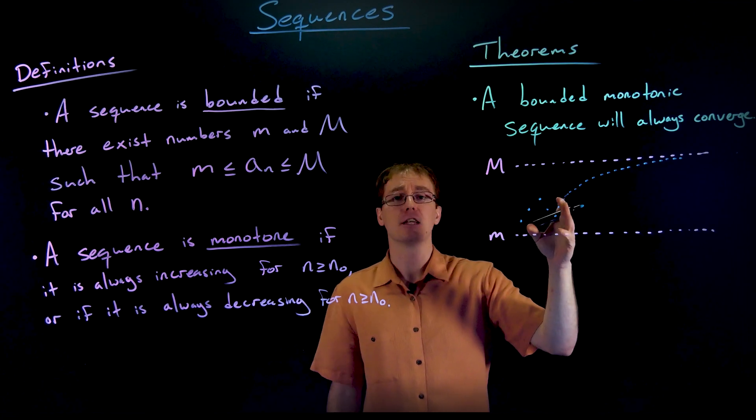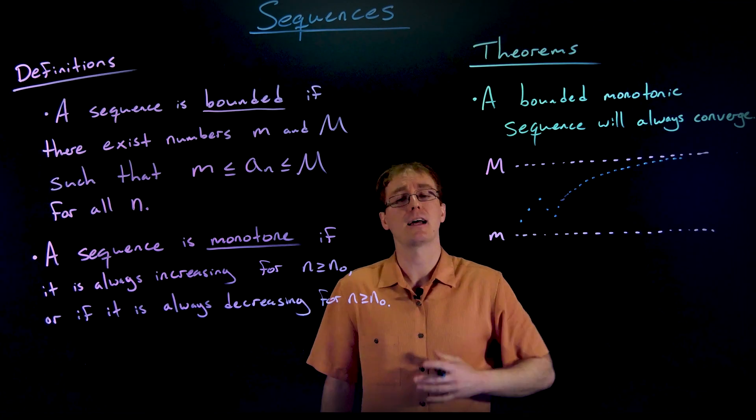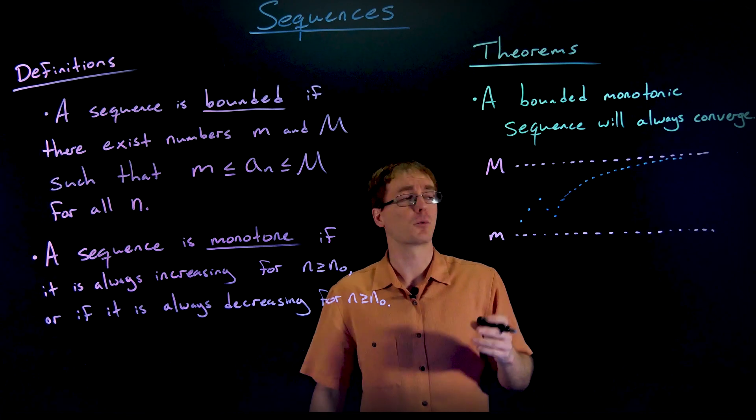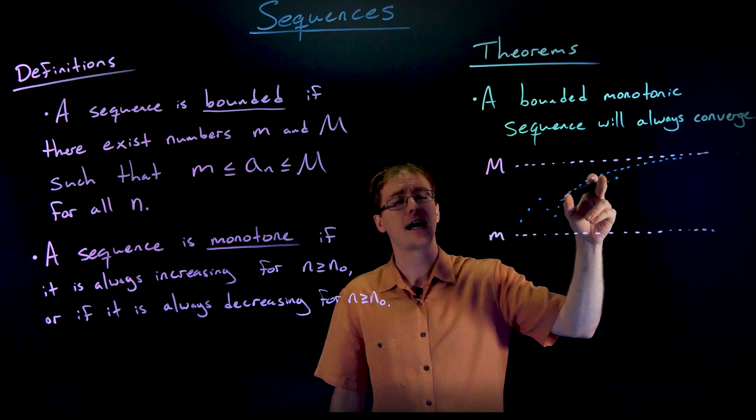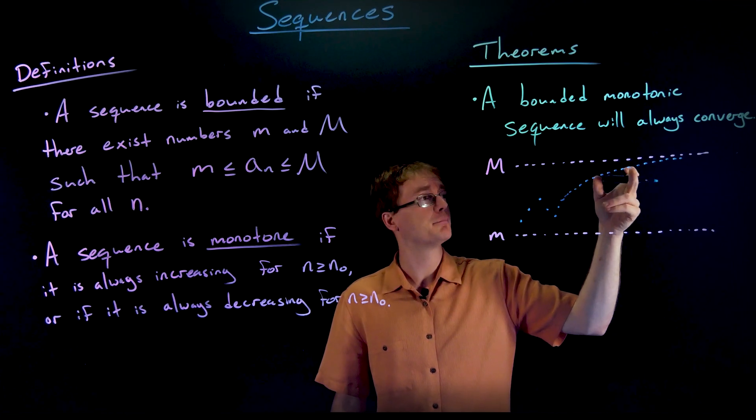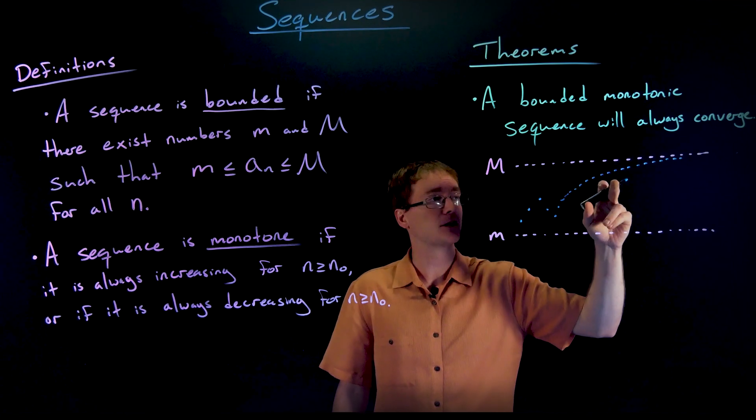In this case, if our sequence is eventually always increasing in that style of monotonicity, then that means after a certain point, the terms in our sequence are going to have to always be getting bigger. But if they're always getting bigger and are bounded above by some maximum value, that means they have to slowly and eventually approach that maximum value.